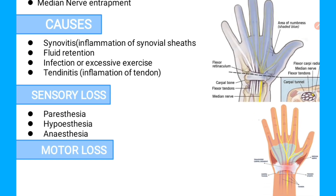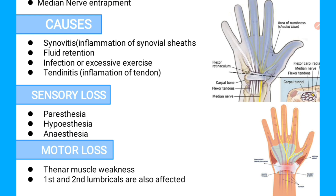We have two Motor Losses associated with Carpal Tunnel Syndrome. The first one is Thenar Muscle Weakness, and the second one is that the first and second Lumbricals are also affected. As seen in the image, the Median Nerve is entrapped in the Carpal Tunnel, and the sensory loss — shown as the area of numbness in blue — includes Paresthesia, Hypoesthesia, and Anesthesia.